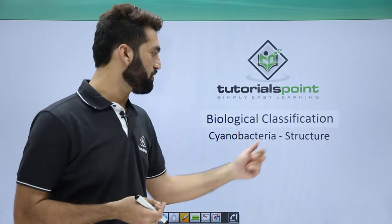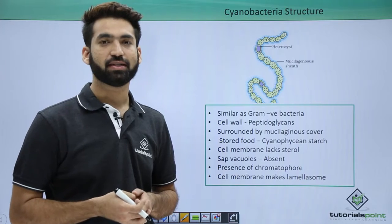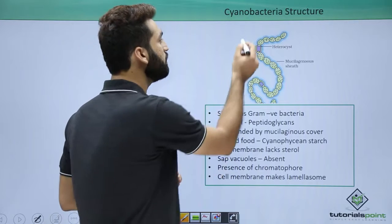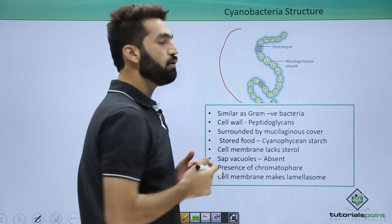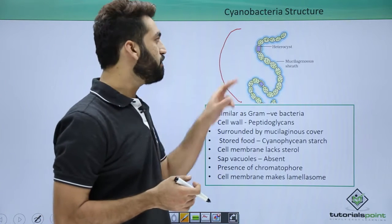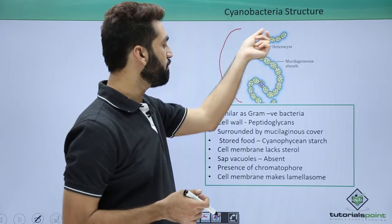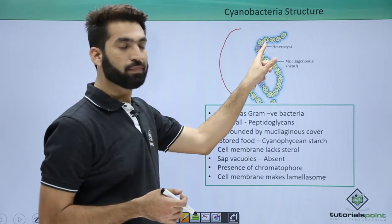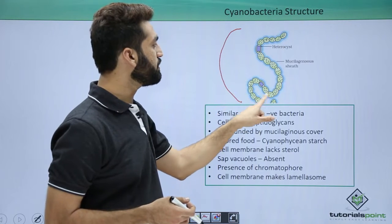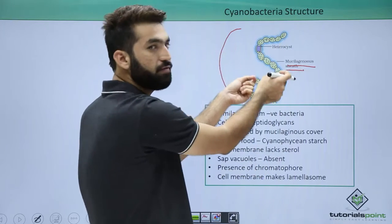In this session, we'll be discussing the structure of cyanobacteria. We've already covered the basic details about cyanobacteria. Now, looking at the structure, this is one example showing Nostoc. Nostoc, as I've already told you, is a filamentous cyanobacteria where the cyanobacteria form this particular filament. This filament remains protected with a sheath—a mucilaginous sheath that protects the filamentous cyanobacteria.